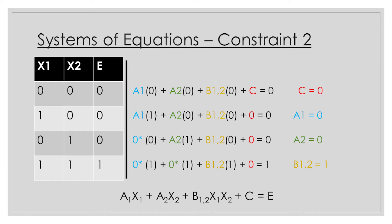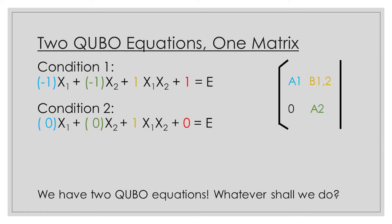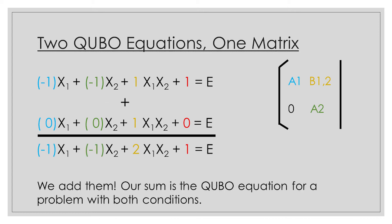After solving our system of equations, we find that c is 0, a1 is 0, a2 is 0, and b12 is 1. So here's our empty QUBO matrix for a constraint with two variables. The only problem is, our QUBO equation — this is getting out of hand, now there are two of them. Whatever shall we do? There's only enough space in our matrix for one of each value. Well, the answer is surprisingly simple: you add them.